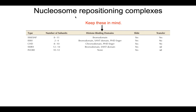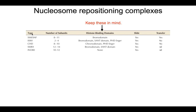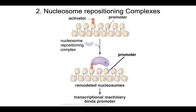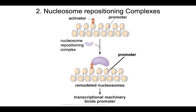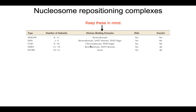Nucleosome repositioning complexes are large proteins that often have domains called histone binding domains. These are protein domains that allow these proteins to bind to specifically modified histones. Bromo domains and chromo domains are going to be the two important ones that we'll talk about in a little bit of detail, so keep them in mind.